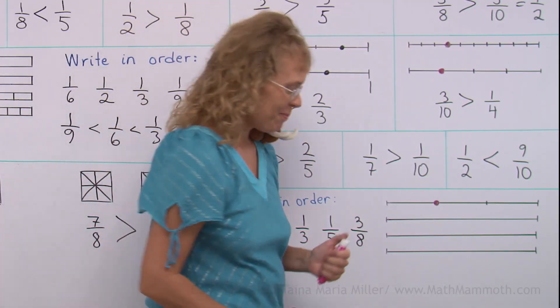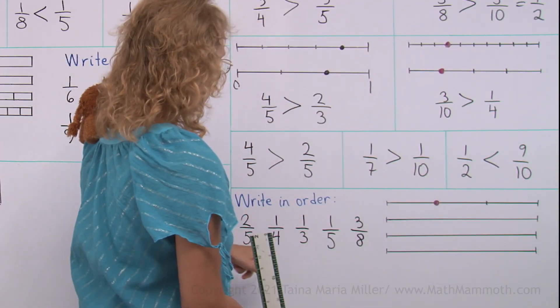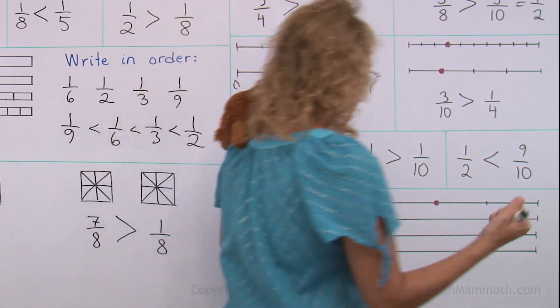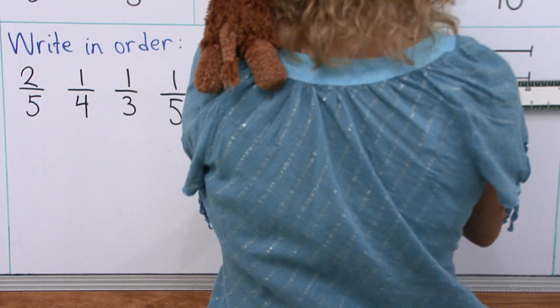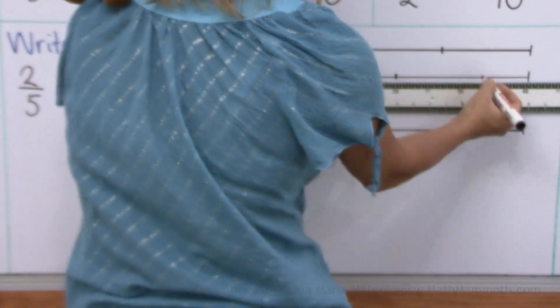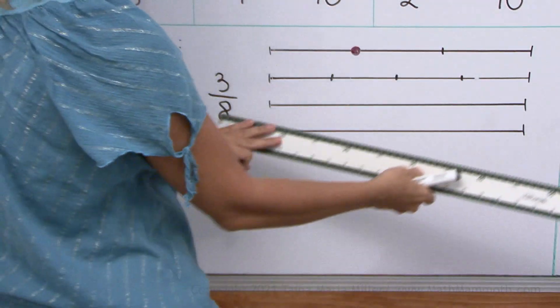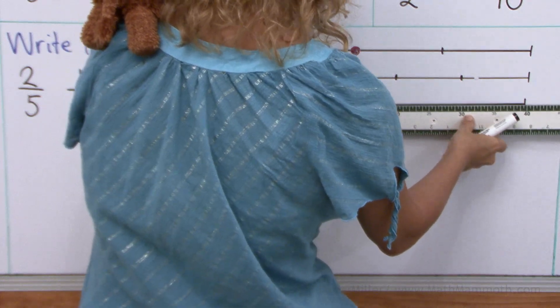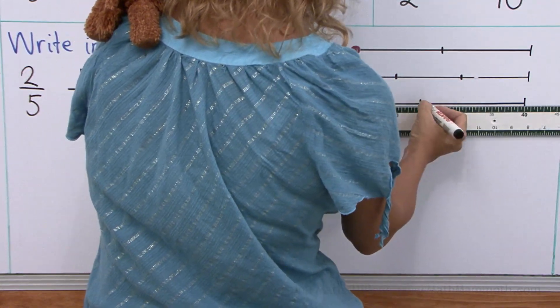Let's use the ruler again and divide the next number line into four parts. Okay, I have 40 centimeters here. Like that. And then the next number line into five parts. So, 40 divided by five is eight.